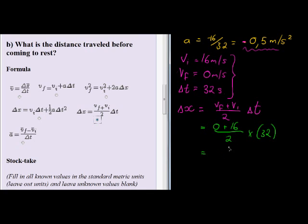So, what do I have? Here I have 16 in the numerator divided by 2 gives me 8 times 32 and that would give me 256 if I'm not mistaken meters.